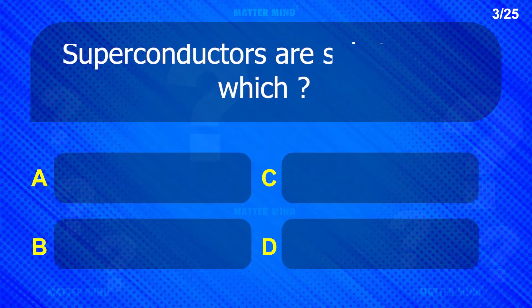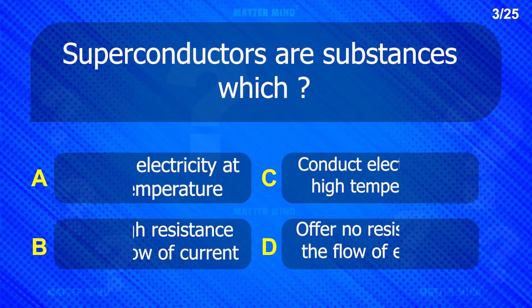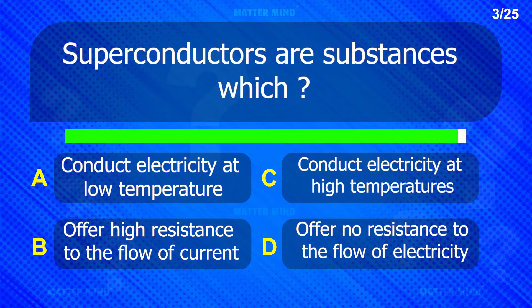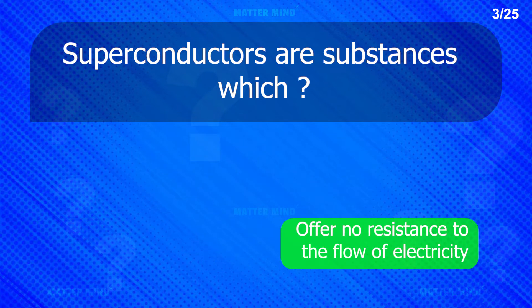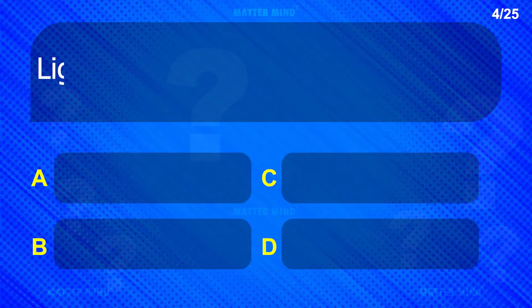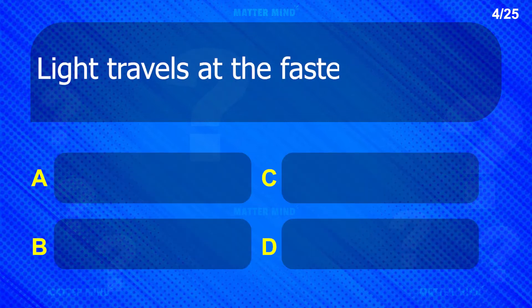Superconductors are substances which — Offer no resistance to the flow of electricity. Light travels at the fastest speed in —